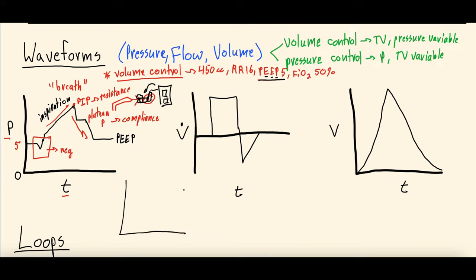Under pressure control, the flow waveform looks a little different. You still get the initial peak, but instead of that boxy square shape, you get a slanted decrease during inspiration and then your expiratory breath. So instead of a box shape for volume control, pressure control gives you more of a triangle shape — related to how flow works under pressure control versus volume control.